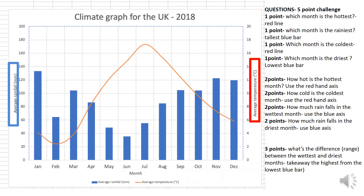If you are using the blue bars to find rainfall, use a ruler, put an arrow, and see where on the blue axis the bar goes up to. This bar is in between 120 and 140 millimetres — it's closer to 140 — so you might say that's 135 millimetres of rain in January.